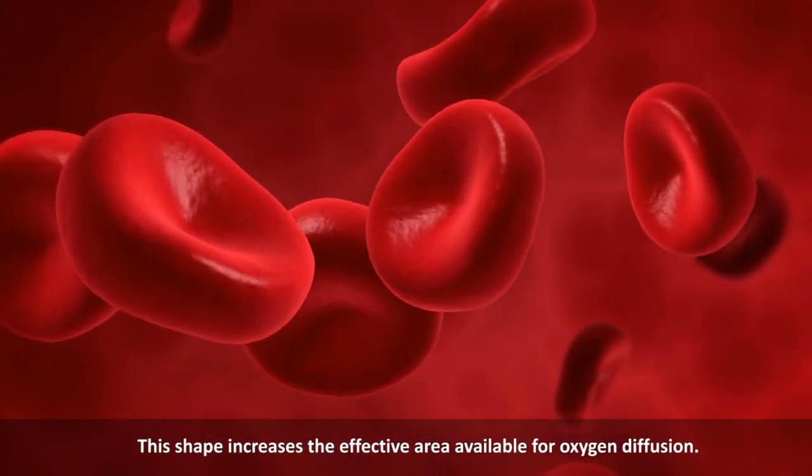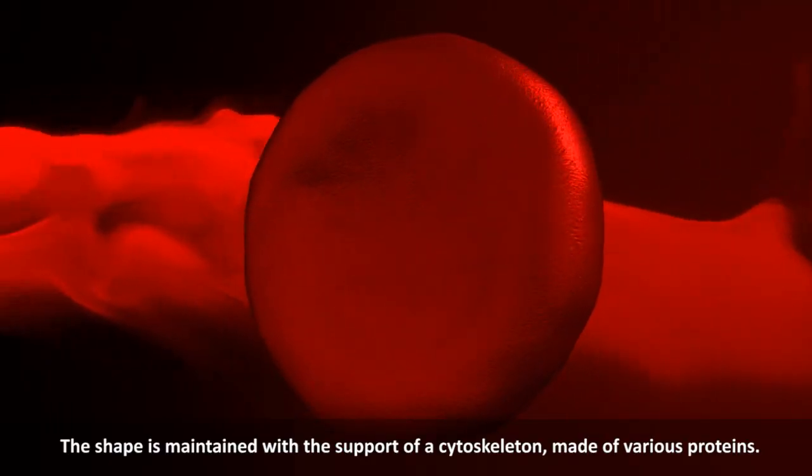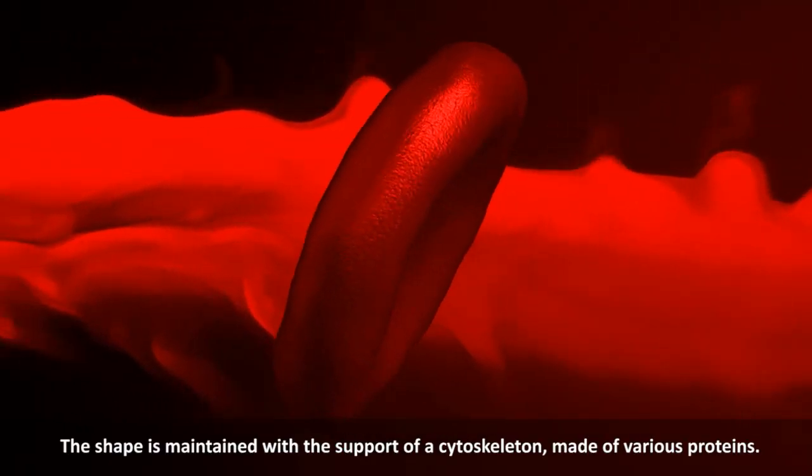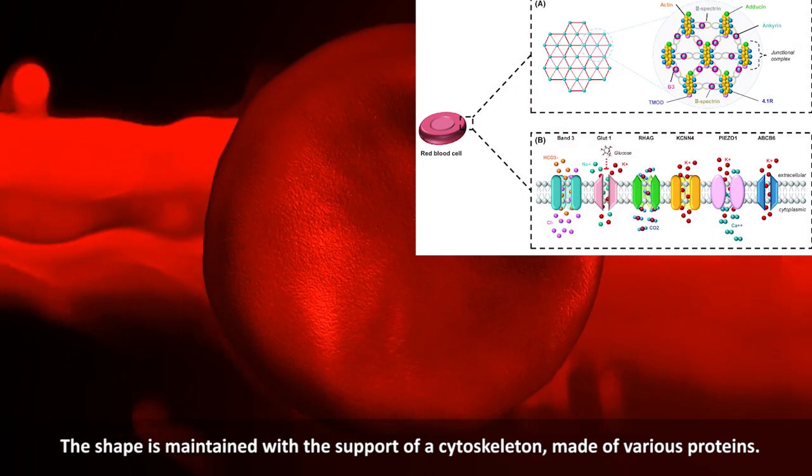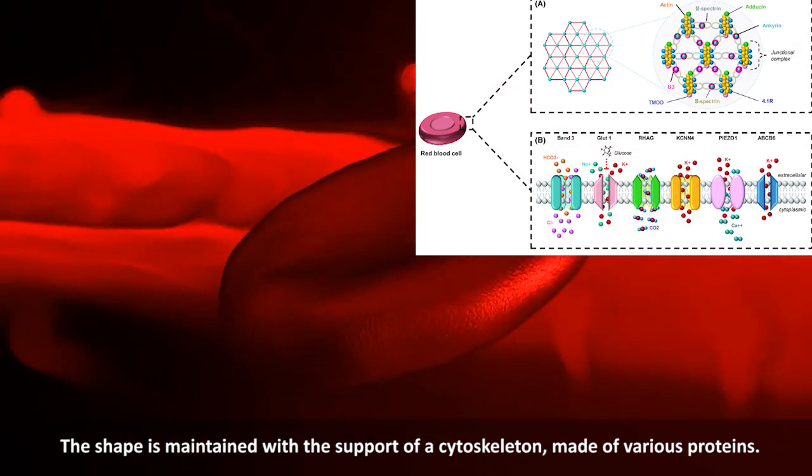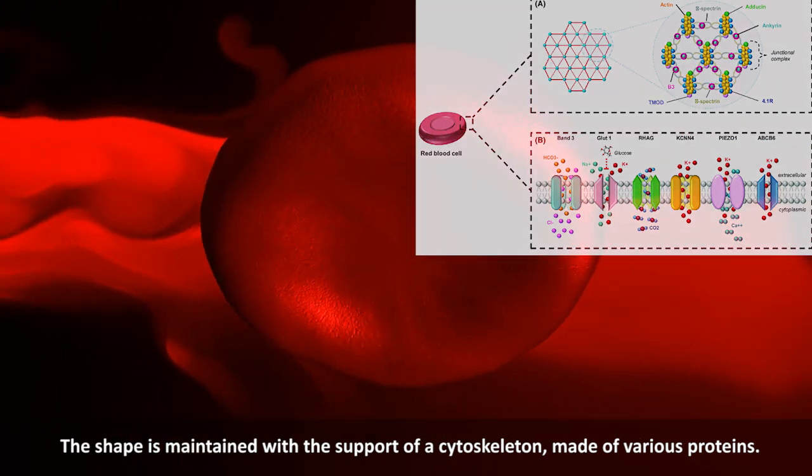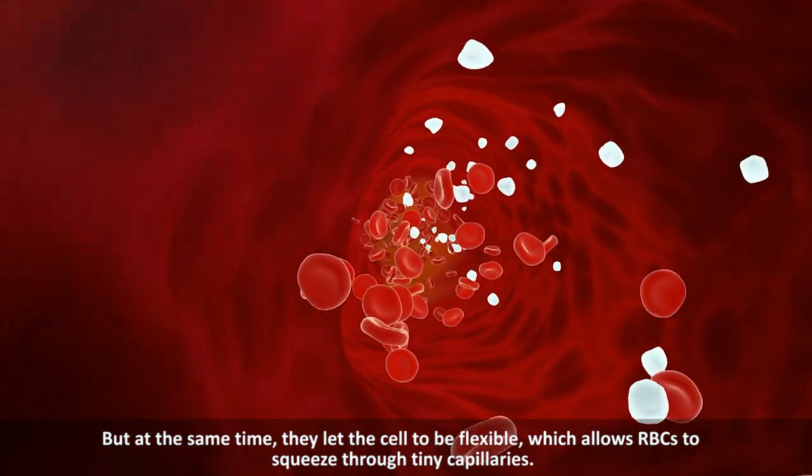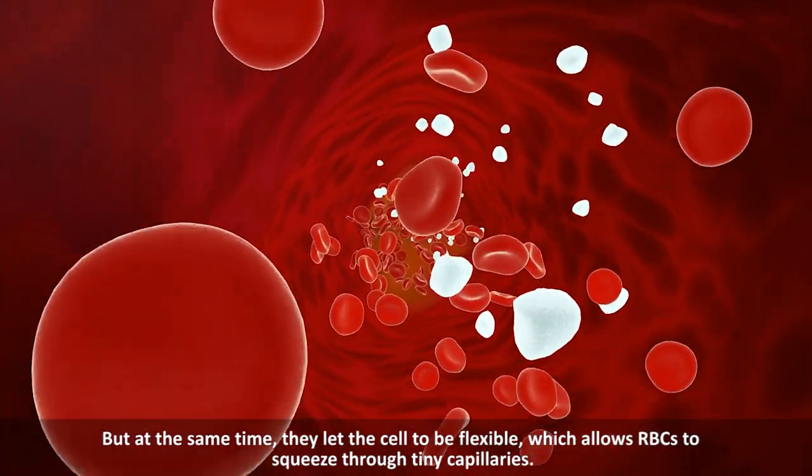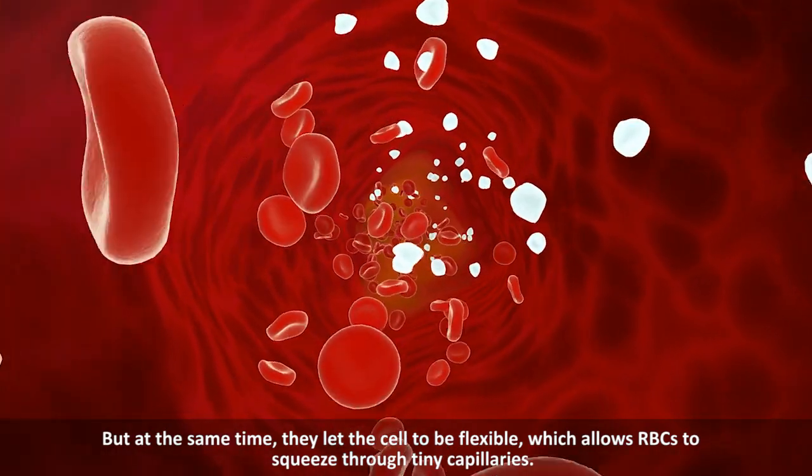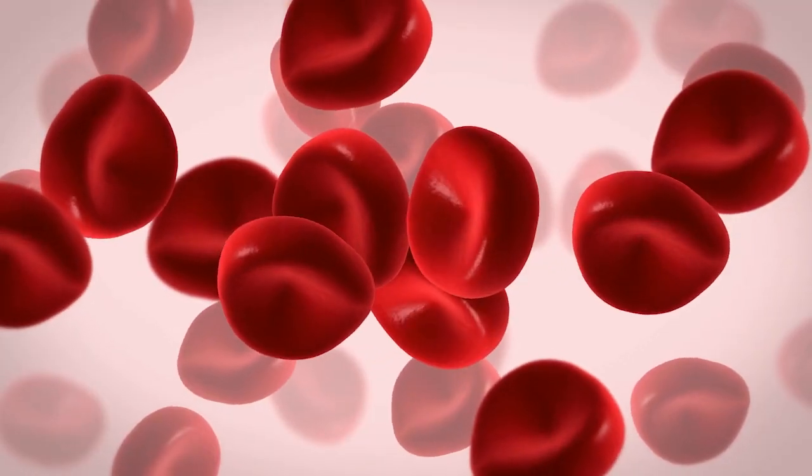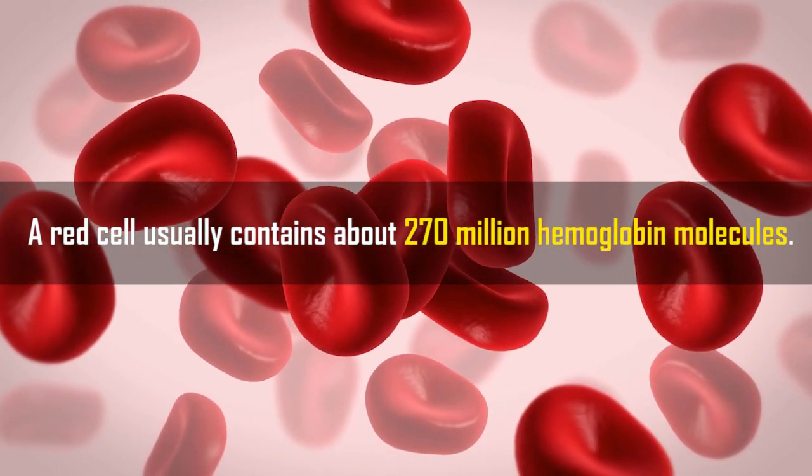This shape increases the effective area available for oxygen diffusion. The shape is maintained with support of a cytoskeleton made of various proteins, but at the same time they let the cell be flexible, which allows red blood cells to squeeze through tiny capillaries. A red cell usually contains about 270 million hemoglobin molecules.